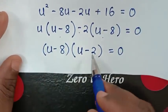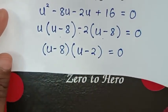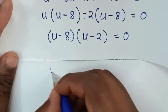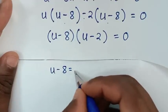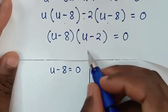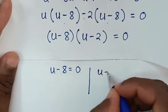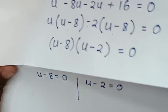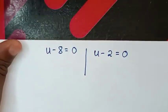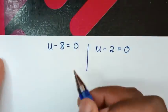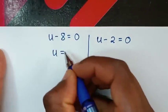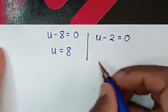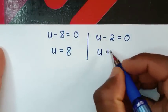Then from here we have two solutions: the first solution is u minus 8 equals 0, giving u equals 8, and the second solution is u minus 2 equals 0, giving u equals 2.